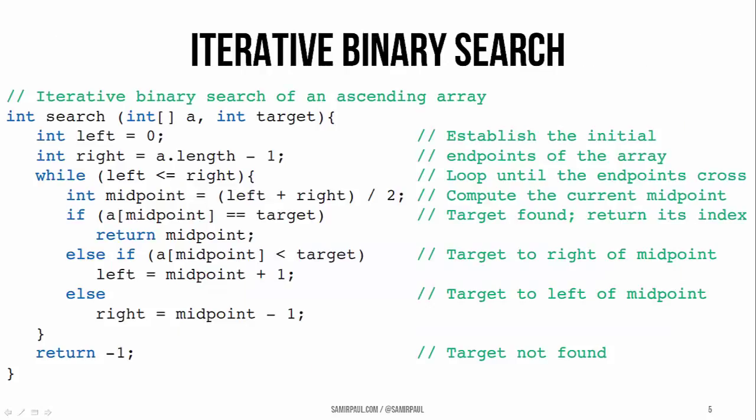Now we'll take a look at two versions of the binary search algorithm — two implementations: one iterative and the other recursive. Both of these run on the order of log n, they're big O of log n, but we won't actually do a formal complexity analysis.